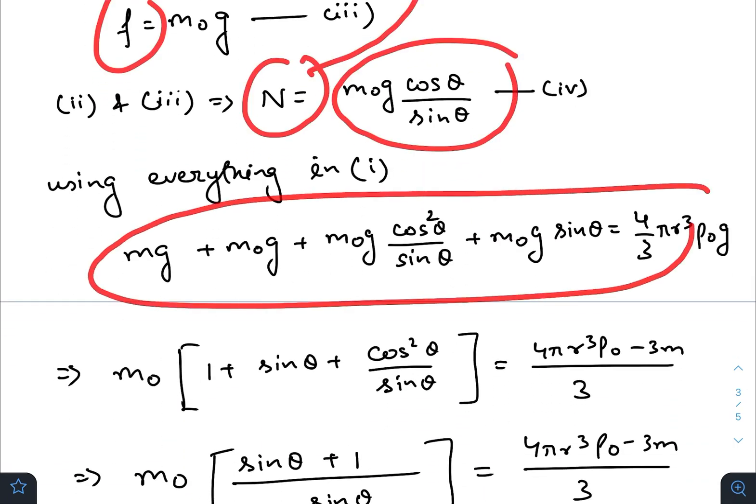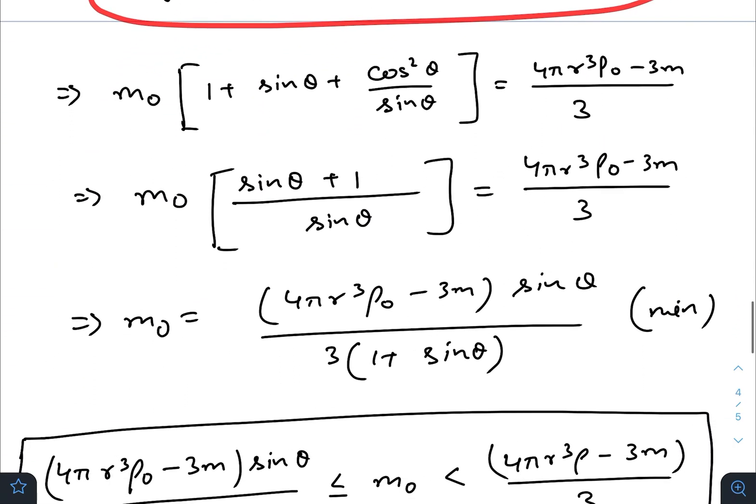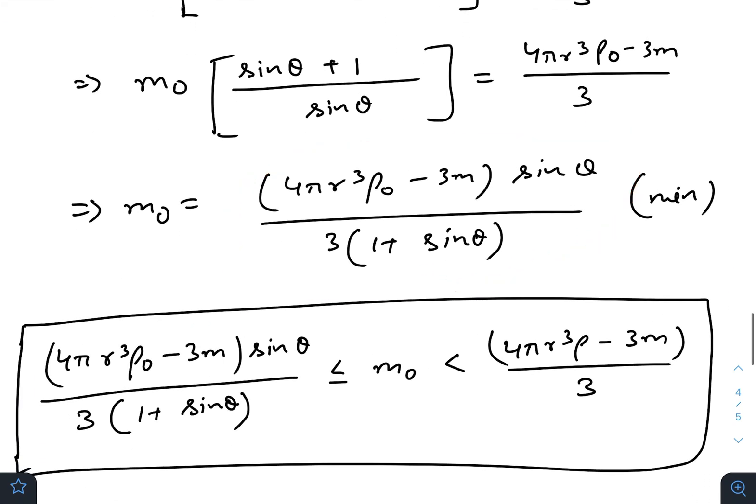You will get something like this. Calculate and you will get the minimum value of m0. So the range of m0 for which the balloon will not roll on the inclined plane will be, this would be the minimum value and any value below this would be the maximum. So it is not less than equal to, it should be less than.